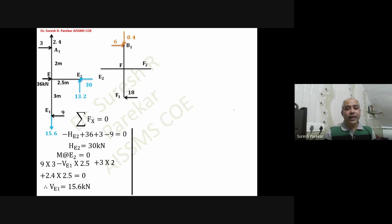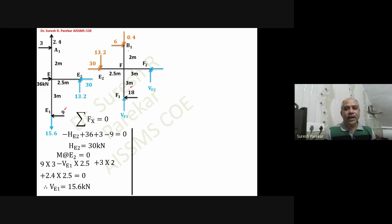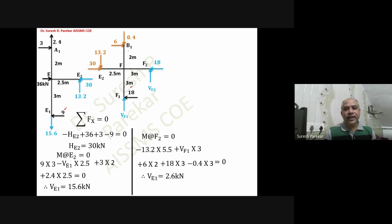For joint F, H2 is 9 kilonewtons and 2H2 is 18 kilonewtons. The three unknowns are VF1, VF2, and HF2. Summation Fx: 30 plus 6 plus 36 minus 18 gives HF2 equal to 18 kilonewtons. Taking moment about F2 gives VF1 equal to 2.6 kilonewtons. Summation Fy gives VF2.